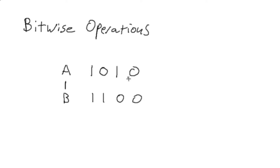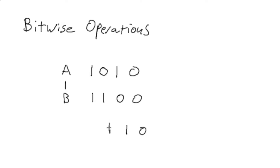Likewise, with A OR B, you simply perform the logical OR operation on a bit-by-bit basis between the two numbers to produce your result — which is why they call it a bitwise operation. So if we were to OR A and B: zero OR zero is zero, one OR zero is one, zero OR one is one, and one OR one is one. So the result of A OR B in this instance results in this number.